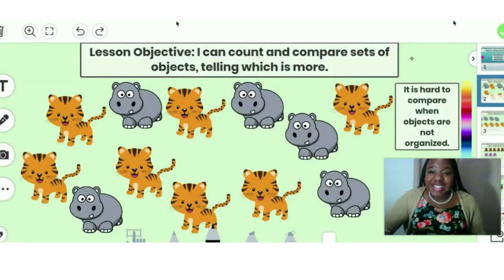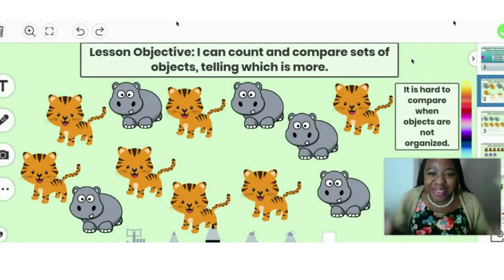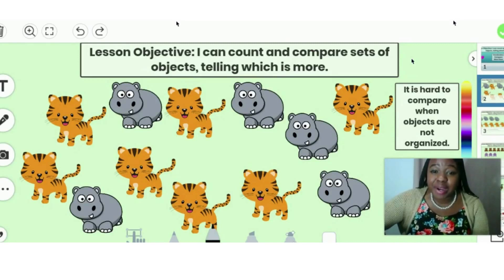Look at this! We have hippos and tigers and they're all scattered around. Guess what, friends? When we want to compare, it makes it very hard to compare when our objects are scattered around. So what do you think we're going to do?